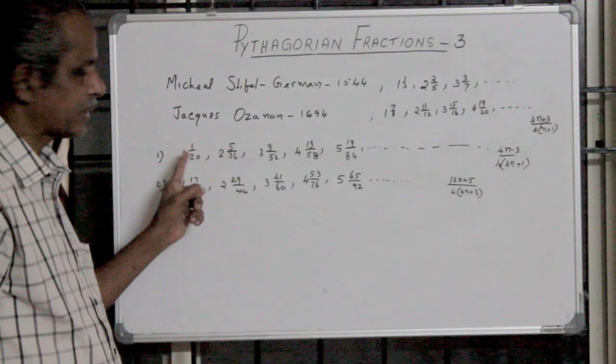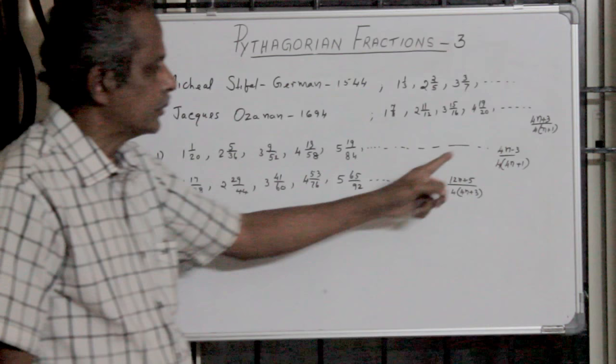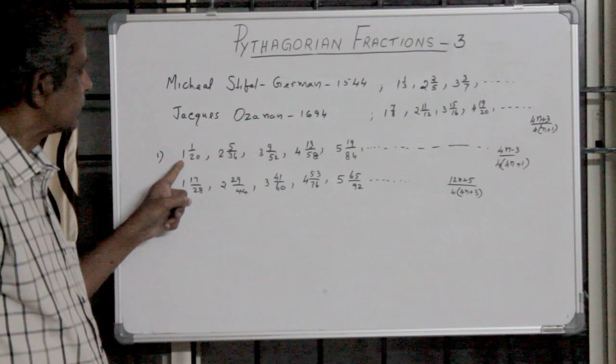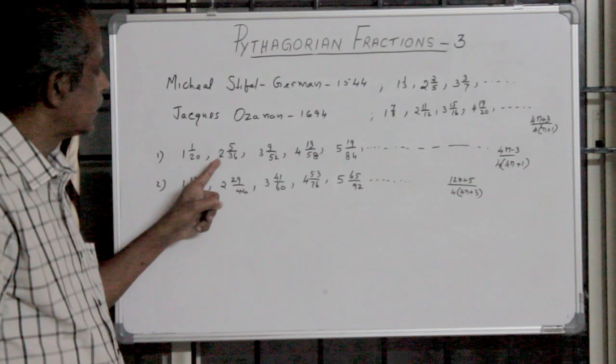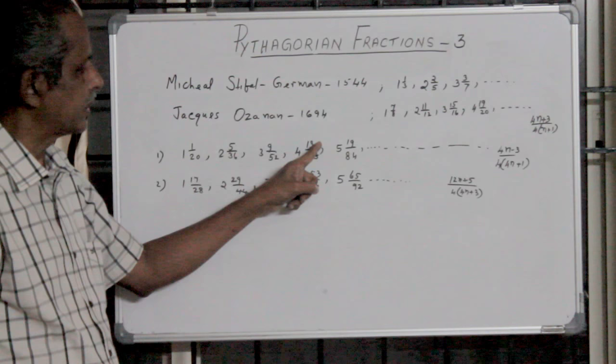If you're considering the proper fraction parts only, the numerator we can write using 4n minus 3. For example, 4 into 1 is 4 minus 3 equals 1. 4 into 2 is 8 minus 3 equals 5. 4 into 3 is 12 minus 3 equals 9. 4 into 4 is 16 minus 3 equals 13.